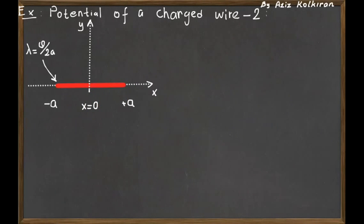In this problem we have a charged rod placed on the x-axis extending from x equals minus a to plus a, and it has total charge q, so the charge density is just q divided by 2a.